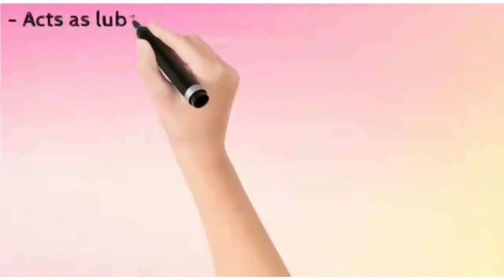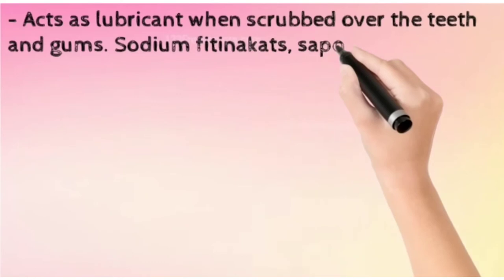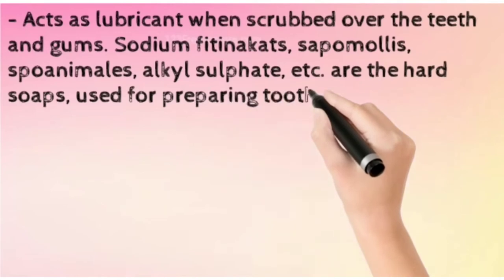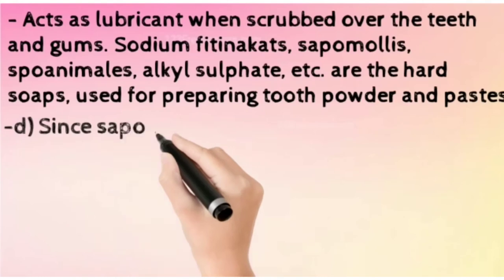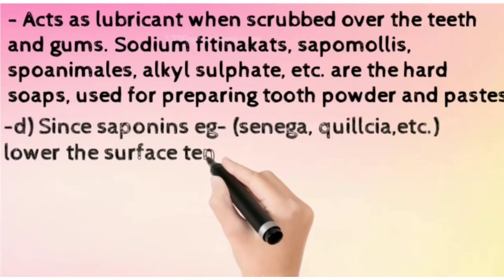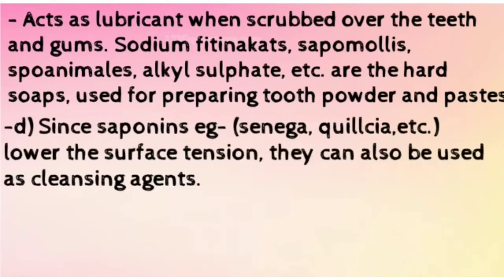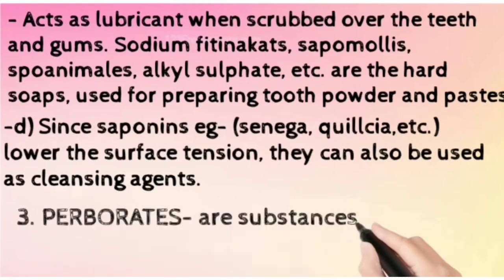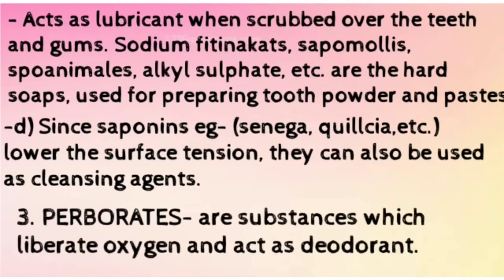Hard soaps act as a lubricant when scrubbed over the teeth and gums. Examples include sodium soap and sapo animalis. Saponins — for example, Senegal, Killisha — also lower surface tension and can be used as cleaning agents. Perborates are substances that liberate oxygen and act as a deodorant.